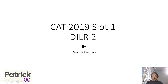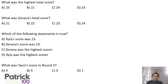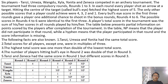We are looking at CAT 19 Slot 1 paper, second set. Look at the set, try to solve on your own and then look at the solution. Let's first read through the set and then try to solve.